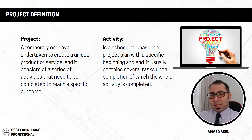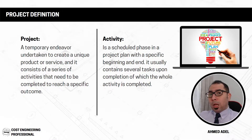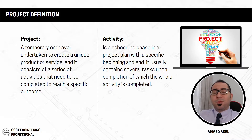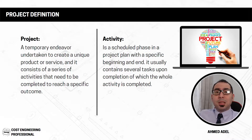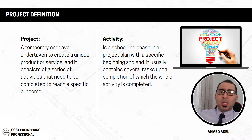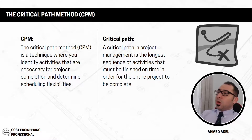To do the formwork activity, the tasks might include: measuring the levels of the slab and beams, erecting the scaffolding, and placing the plywood. Once the plywood is in place, the formwork activity is completed and the next activity can start — for example, steel reinforcement for the first floor slab. In Primavera we work at the activity level, not the task level, since tasks are smaller portions of an activity.